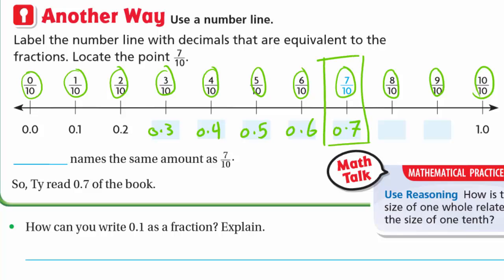Continuing on the number line: 7 tenths is the same as 0.7. So 7 tenths names the same amount as 0.7. We read 7/10 as '7 tenths' and we read 0.7 also as '7 tenths' — whether it's written as 0.7 or 7 over 10, we say '7 tenths'.